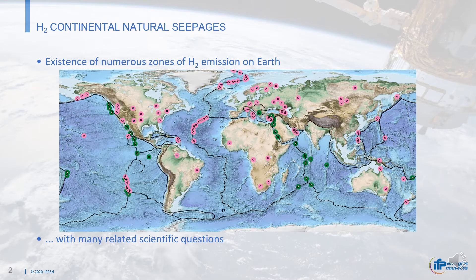So far, emissions of native hydrogen were considered as events mainly located at plate boundaries. But if you take a closer look at the image, they appear to be quite common also in the intra-cratonic areas. These emission zones are very interesting since they represent, if exploitable, a natural source of energy whose combustion would only produce water.